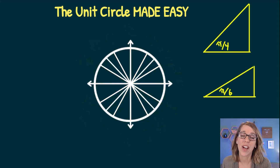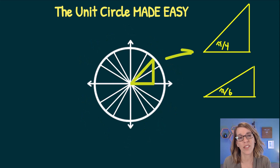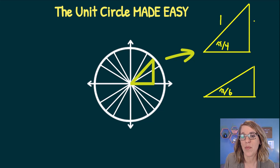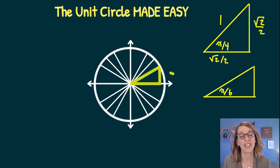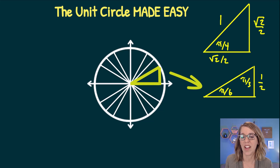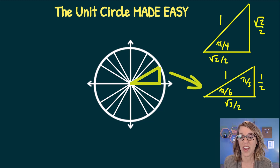All of the point values come from either a pi-fourths, or 45-45-90 triangle with hypotenuse 1 — giving leg lengths of radical two over two — or from a pi-sixths, or 30-60-90 triangle, where across from pi-sixths is one-half, across from pi-thirds is radical three over two, and the radius equals one.